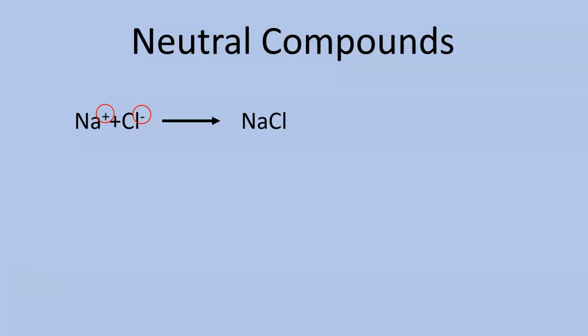You do not have to write the one, it is understood. But because those two cancel out, you're ending up with NaCl. Another one that I wanted to show you: we have calcium, which is a positive two, and sulfur, which is a negative two. That positive two and negative two cancel each other out, and what are we left with? CaS.